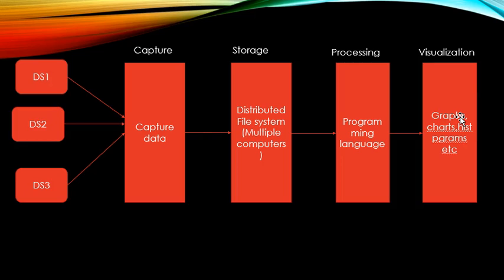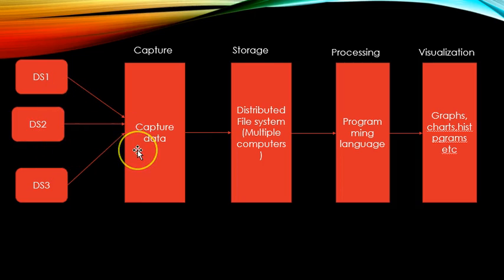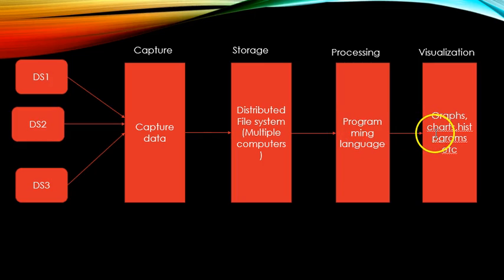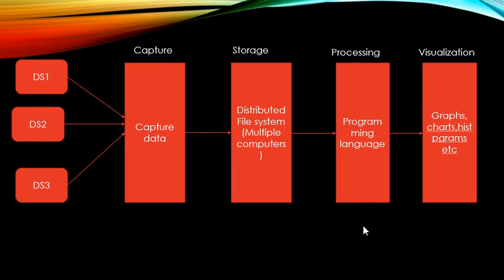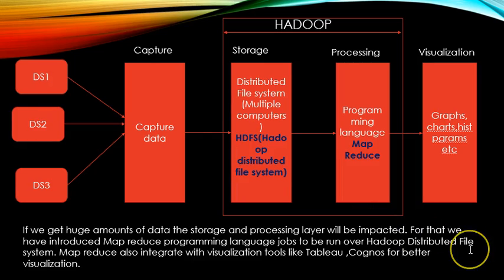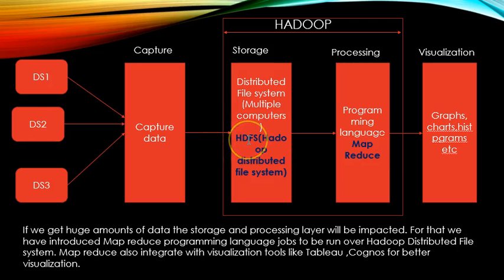Let us learn about the traditional system first. There are three data sources — DS1, DS2, DS3. Data is captured, then stored, then processed, and then visualized. Storage is done by multiple computers using distributed file systems, and processing is done by any programming language.